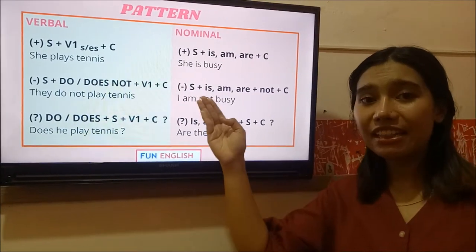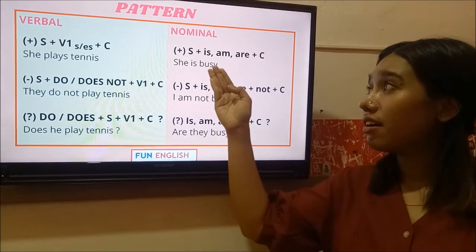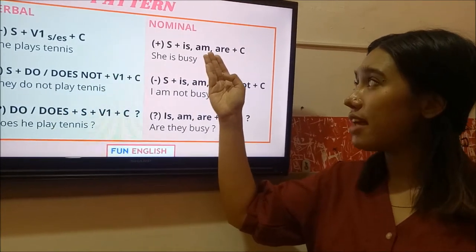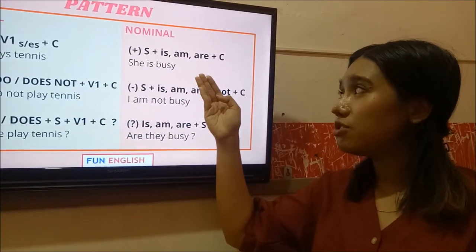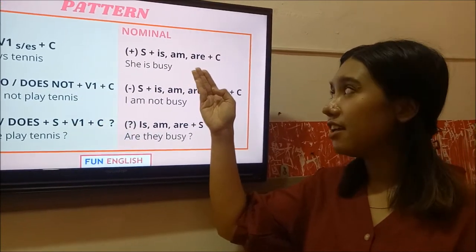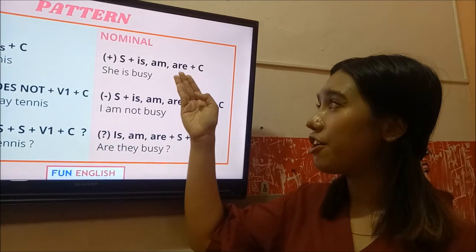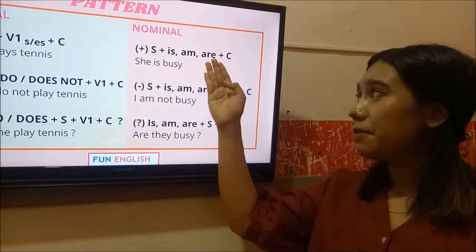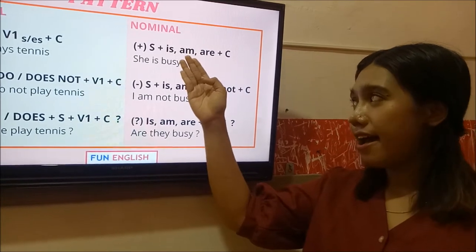Because she must use is. When you say I, you should use am. When you say we and they, you should use are. She is busy. They are busy. I am busy.